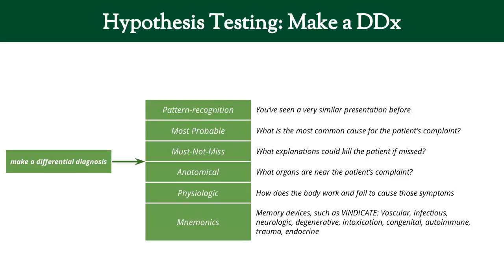Most probable: these are the most common causes. So if someone comes in with fever, cough, and runny nose, most likely it's a cold — it doesn't have to be, but most likely it is. Another method is 'must not miss.' This is what we use in the emergency department. These are diagnoses that if you miss them, the patient can die or lose some function — like losing an arm or the ability to walk. So you should always consider these things.